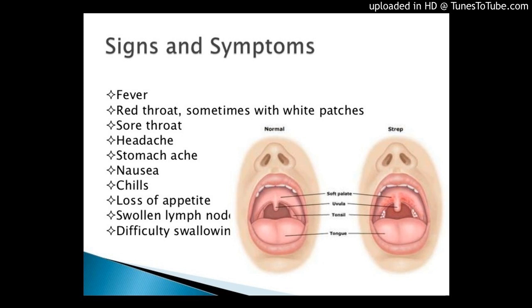Diagnosis. If doctors suspect an adult has an invasive group B strep infection — infections where the bacteria have entered a part of the body that is normally not exposed to bacteria — they will take a sample of sterile body fluids, such as blood or spinal fluid. These samples are cultured, meaning bacteria are grown in the laboratory, to see if group B strep bacteria are present, which can take a few days.